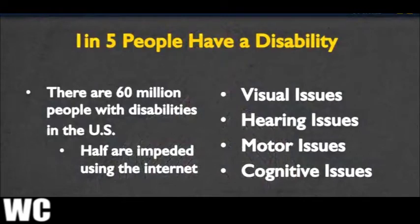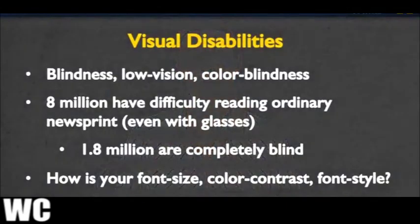According to the 2012 U.S. Census, one in five people in the U.S. have a disability - that's 60 million people dealing with issues others may not have, and half of them are impeded from using the Internet. We'll talk about four issues: visual, hearing, motor, and cognitive. When you talk about accessibility, almost everyone thinks about screen readers. However, while 1.8 million people are completely blind, we also have 8 million people who have difficulty reading ordinary newsprint even with their glasses on. When designing, think about more than just font size - also think about color contrast and font style. Can someone really see your page as easily as possible?